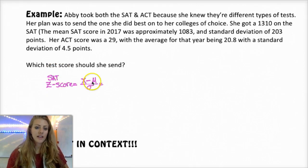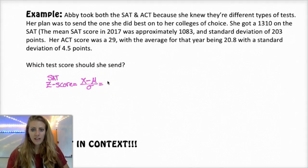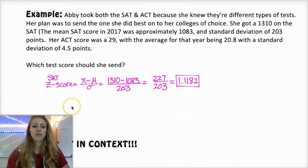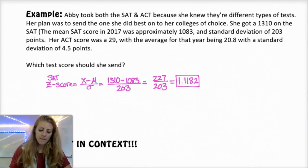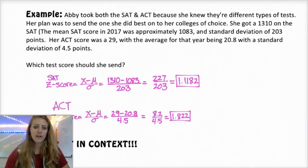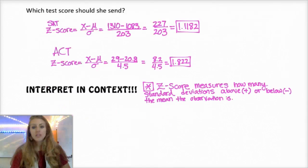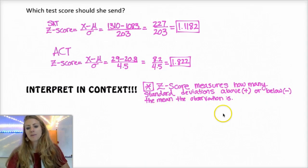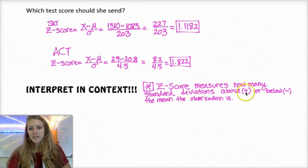For the SAT, her Z-score is X minus the mean divided by the standard deviation. So that's 1310 minus 1083 divided by 203, which is 227 over 203, which is 1.1182. You do the same thing for the ACT, and you find that her ACT Z-score is 1.8. So in context, the Z-score measures how many standard deviations above or below the mean the observation is. You know it's above if you get a Z-score that's positive and below if you get a Z-score that's negative.